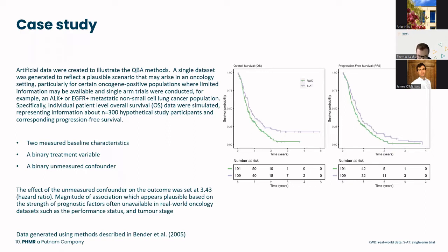The effect of the unmeasured confounder on the outcome was set to a hazard ratio of 3.43. This magnitude appears plausible based on the strength of prognostic factors often unavailable in real-world oncology datasets, such as performance status and tumour stage. The data was generated using the method described in Bender et al. 2005, and all analysis and simulation was conducted in R.